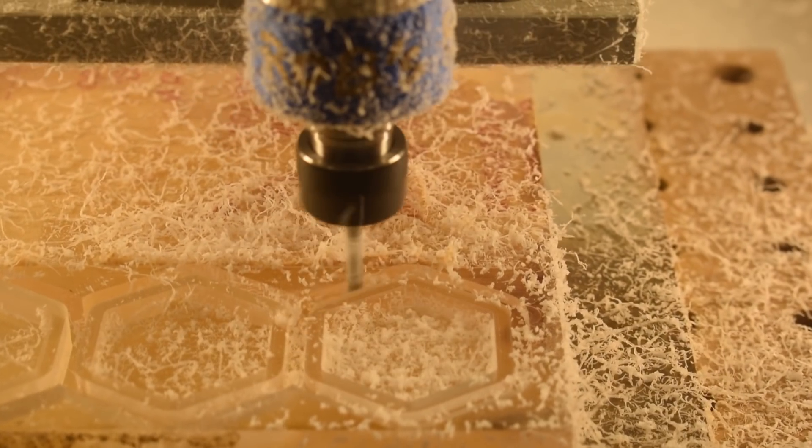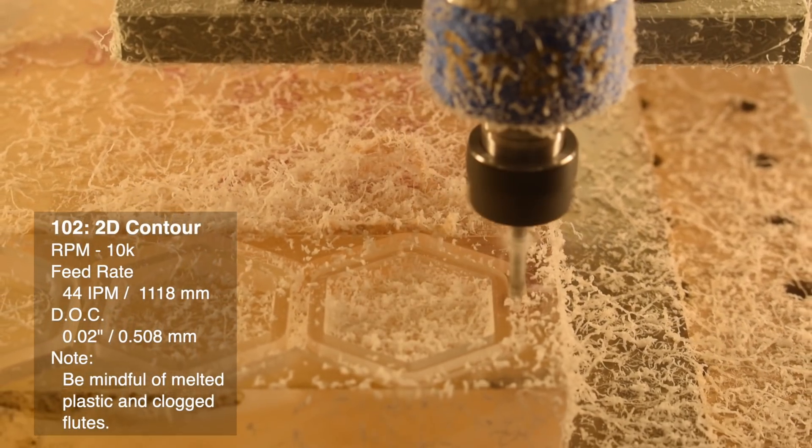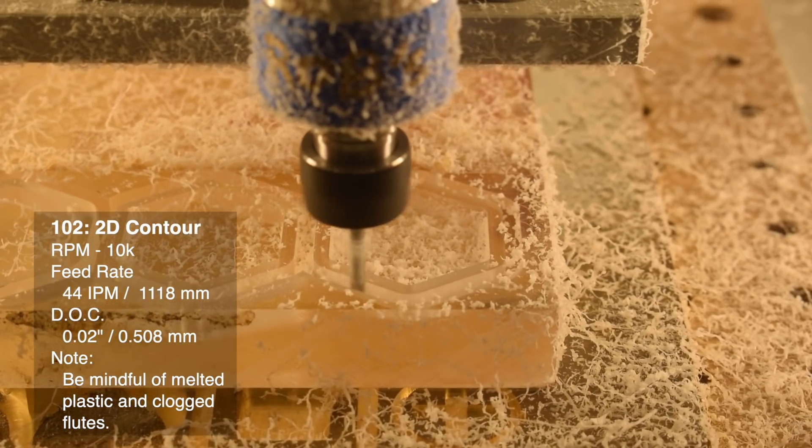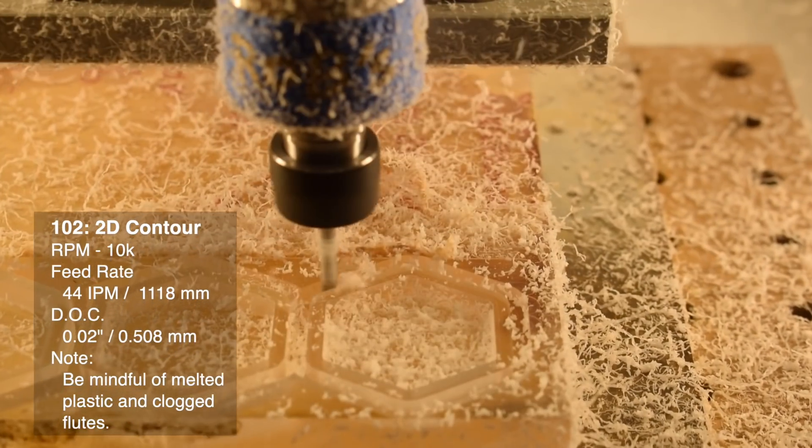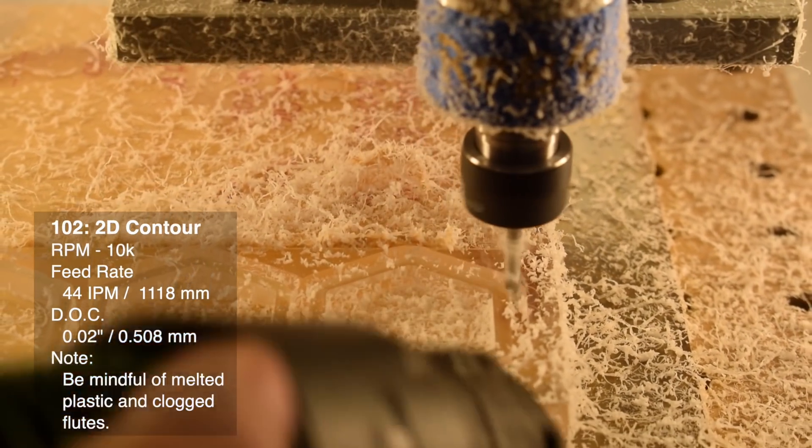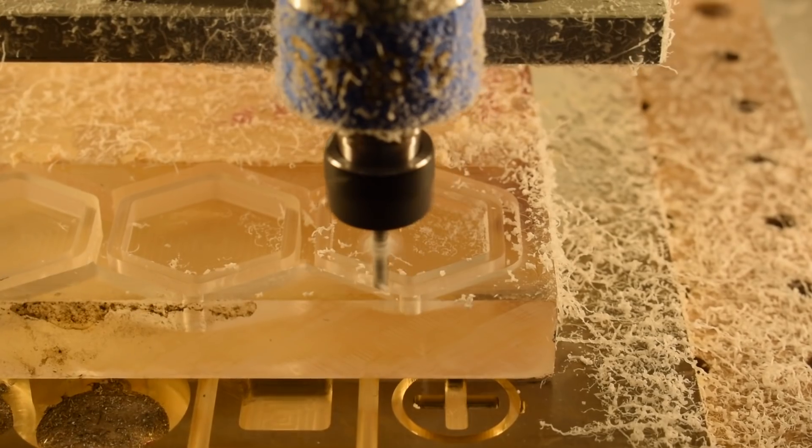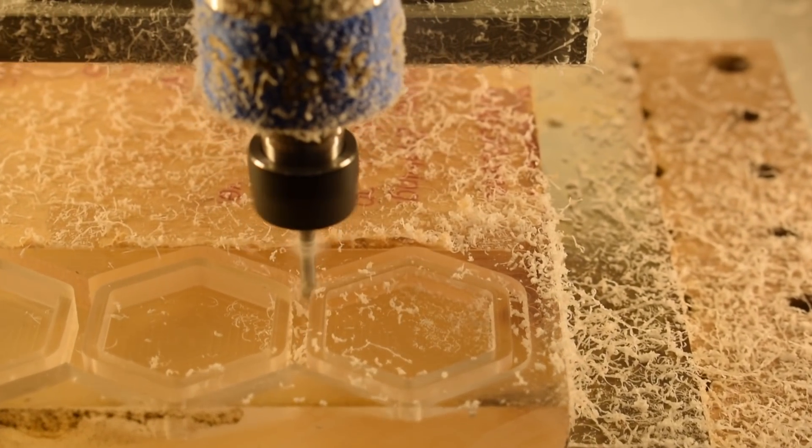For contouring, we're doing the same thing. 10,000 RPM, 44 inches per minute, a 0.02 inch depth of cut. And an important thing to do here is to make sure you prevent chips from clogging up the flutes. Because once that starts happening, you start melting plastic and things go downhill fast.